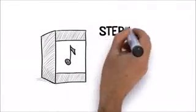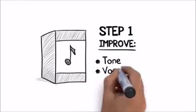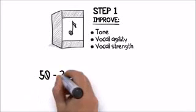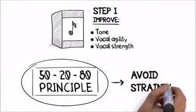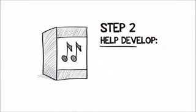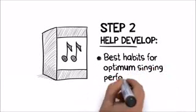Step one is all about retraining your voice and getting it ready for more challenging vocal exercises. The tips and exercises in this step will begin to improve your tone, vocal agility, and your vocal strength. Plus, you will learn my 50-20-80 principle that will start to teach you how to avoid straining when you sing. Step two is where you will learn some very important and often overlooked singing techniques that will help you to develop the best habits for optimum singing performance.